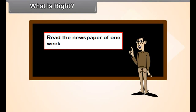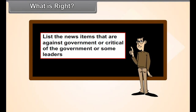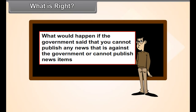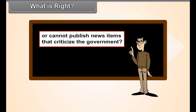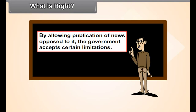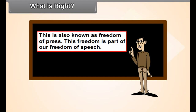Read newspapers of one week. List the news items that are against the government or critical of the government or some leaders. What would happen if the government said that you cannot publish any news that is against the government? By allowing publication of news opposed to it, the government accepts certain limitations. This is also known as freedom of the press. This freedom is part of freedom of speech.